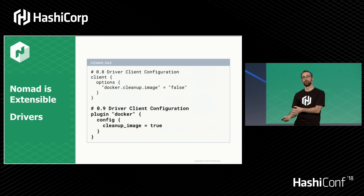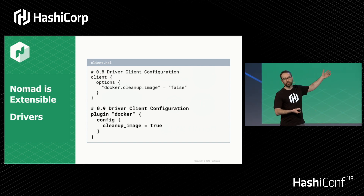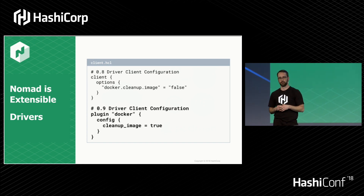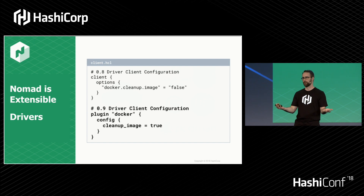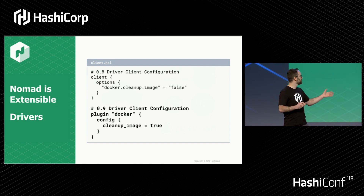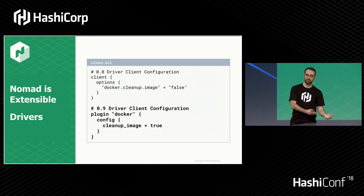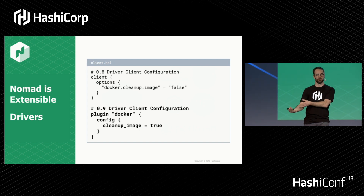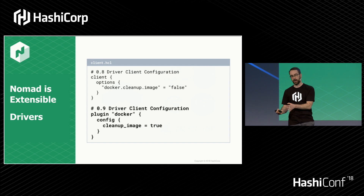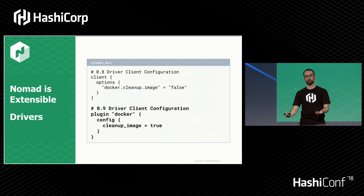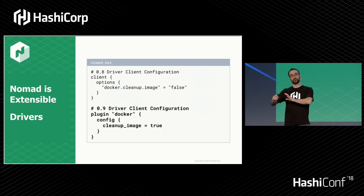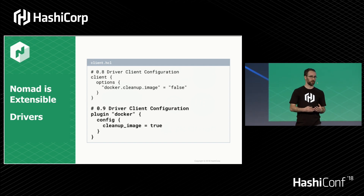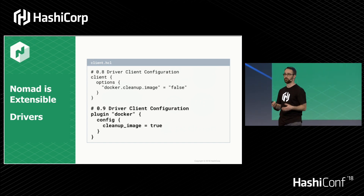Along with plug-ins, we're going to be improving the way you can configure drivers. At the top of the screen, you can see the old way we allowed you to customize some of the behaviors of the built-in plug-ins — it was a very ugly map from strings to strings. In the plug-in world, we're going to make plug-in stanzas first class. Plug-ins define their configuration schema, Nomad verifies and validates the configuration. Your plug-in will only ever receive valid configurations, and you get a full type system — the Boolean true is an actual Boolean. Nomad handles all the parsing for you, and your plug-in receives the configuration as a well-formed object.